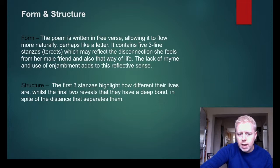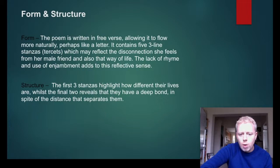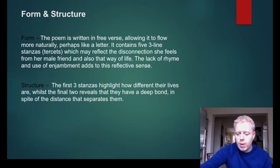For example on form: the poem is written in free verse, allowing it to flow more naturally, perhaps like a letter — that's your method and meaning. It contains five three-line stanzas known as tercets, which may reflect the disconnection she feels from her male friend and that way of life. The lack of rhyme scheme and use of enjambment adds to this reflective sense. When analyzing and comparing this poem, you must identify the techniques but also explore the meaning.